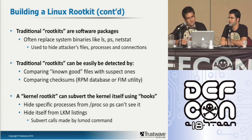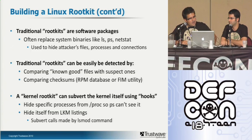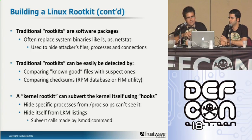The difficulty with older rootkits was that they were easily detected by doing MD5 hashes on the actual binaries against known good media — that would detect that your binaries were tampered with. A kernel rootkit doesn't replace your system binaries, so if you do your MD5 hash against all your system binaries they all appear the same. What it does is subvert the kernel, making it more difficult to detect.